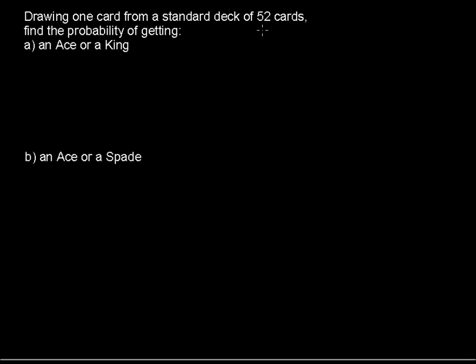Drawing one card from a standard deck of 52 cards, find the probability of getting an ace or a king.